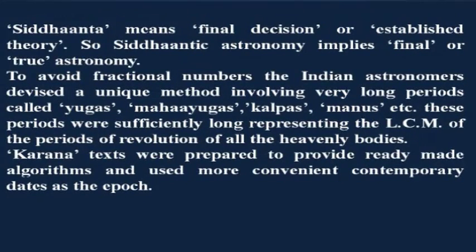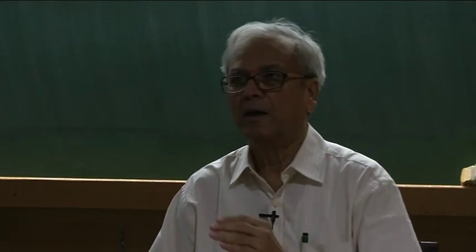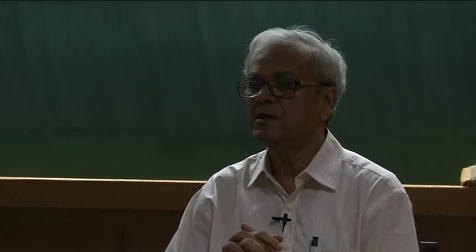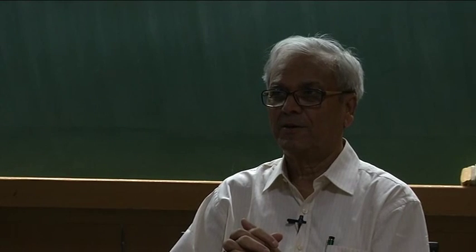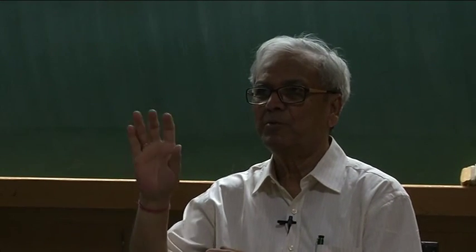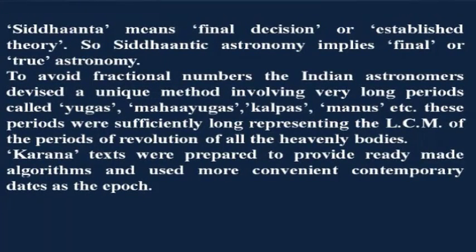These Siddhanta texts are quite massive and describe many things - the system of the universe, calculations for determining eclipses, and so on. Since the Siddhantas were so big, authors often created smaller versions called Karanas - like a handbook - which would be quickly used for calculating things or preparing panchangas or calendars. Karana texts were prepared primarily to give ready-made algorithms using more convenient contemporary dates as the epoch.